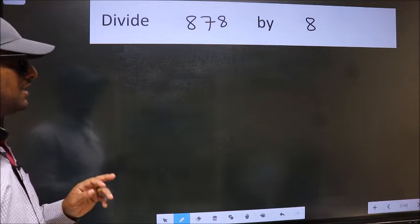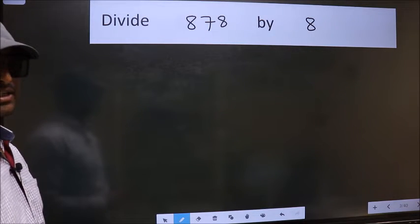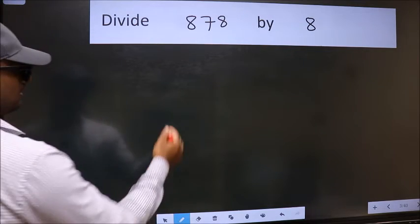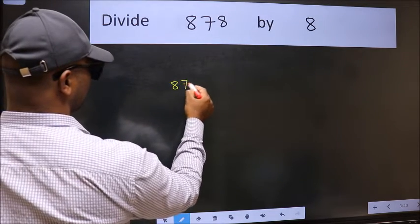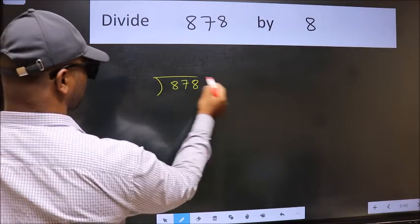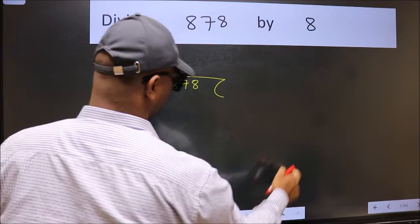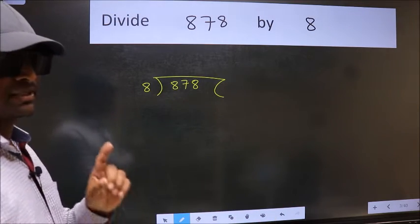Divide 878 by 8. To do this division, we should frame it in this way. 878 here and 8 here. This is your step 1.